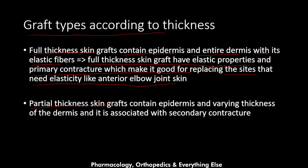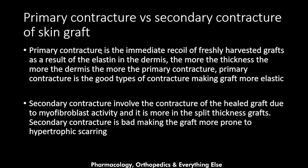Partial thickness skin grafts contain the epidermis and varying degrees of the dermis, and are associated with secondary contracture. Primary contracture is the immediate recoil of freshly harvested grafts due to elastin in the dermis — the thicker the dermis, the more primary contracture — and it is a good type that makes the graft more elastic. Secondary contracture involves contracture of the healed graft due to myofibroblast activity; it is more common in split thickness grafts and makes the graft more prone to hypertrophic scarring.